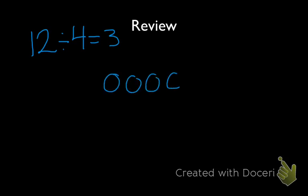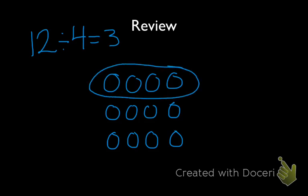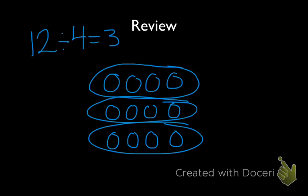If we wanted to show this as a model, let's say we had 12 objects, and we wanted to divide them equally into groups of 4. So here's 1 group, here's 2 groups, here's 3 groups. How many groups do we have total? We have 1, 2, 3 equal groups of 4.